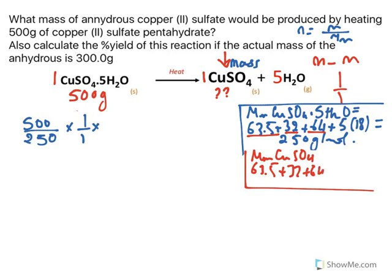And the answer is 159.5, which is almost 160 grams per mole. So this must be multiplied by 160 and the answer would be 320 grams of copper sulfate.